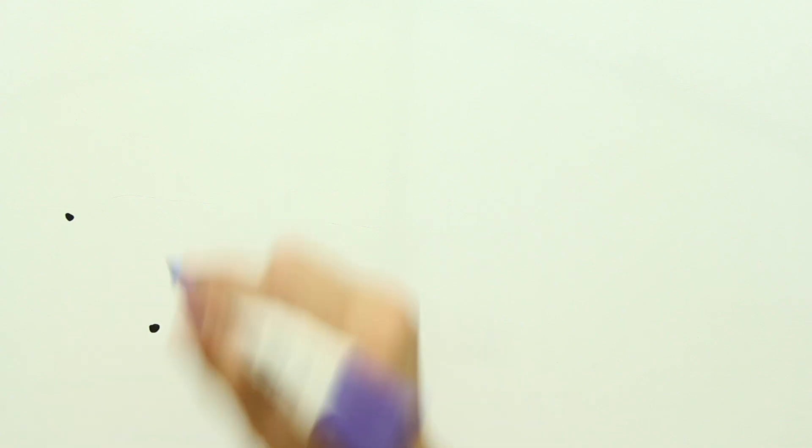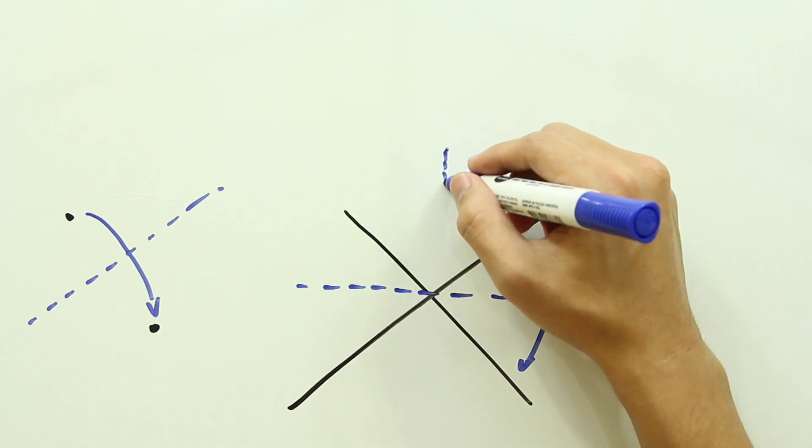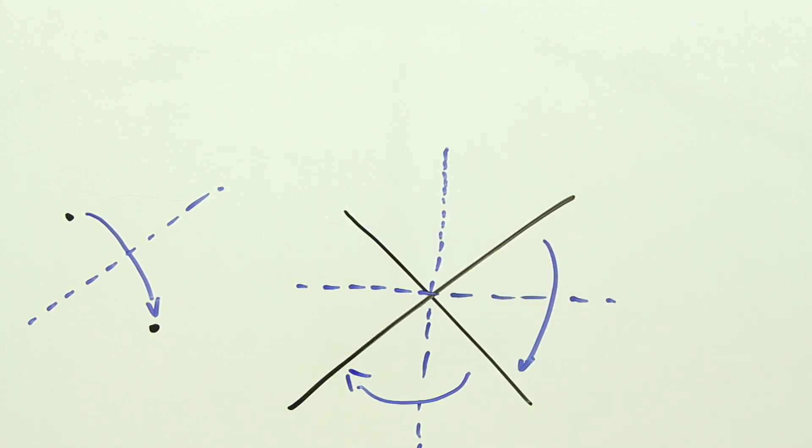You can make a fold that places a point onto another point and a line onto another line. If the points and lines are not coincident, the first construction has one solution and the second construction has up to two solutions.